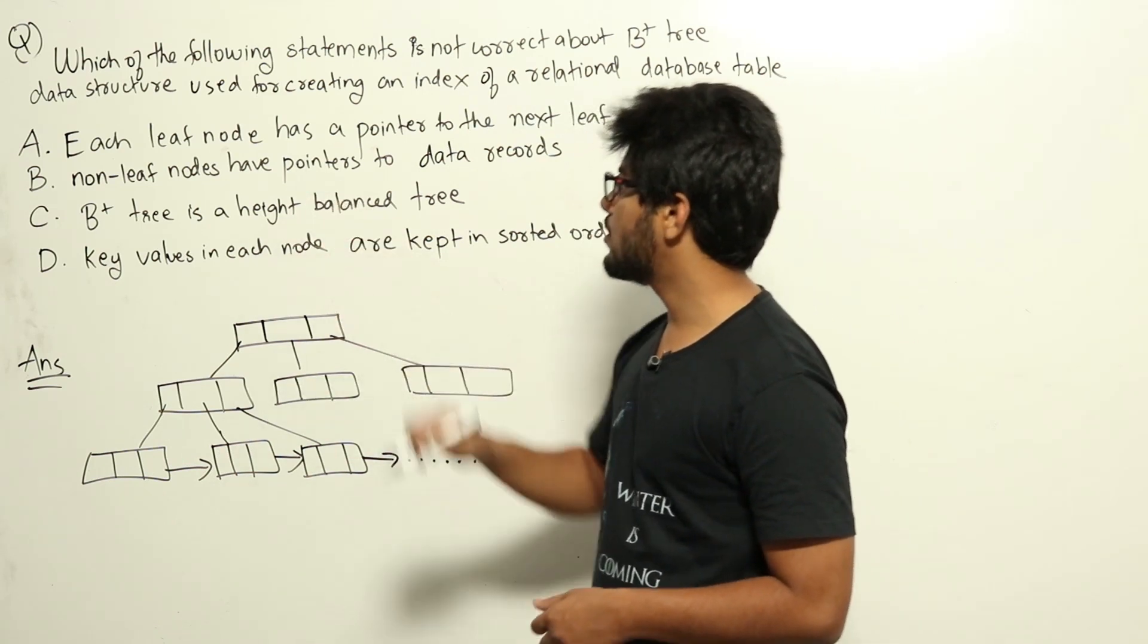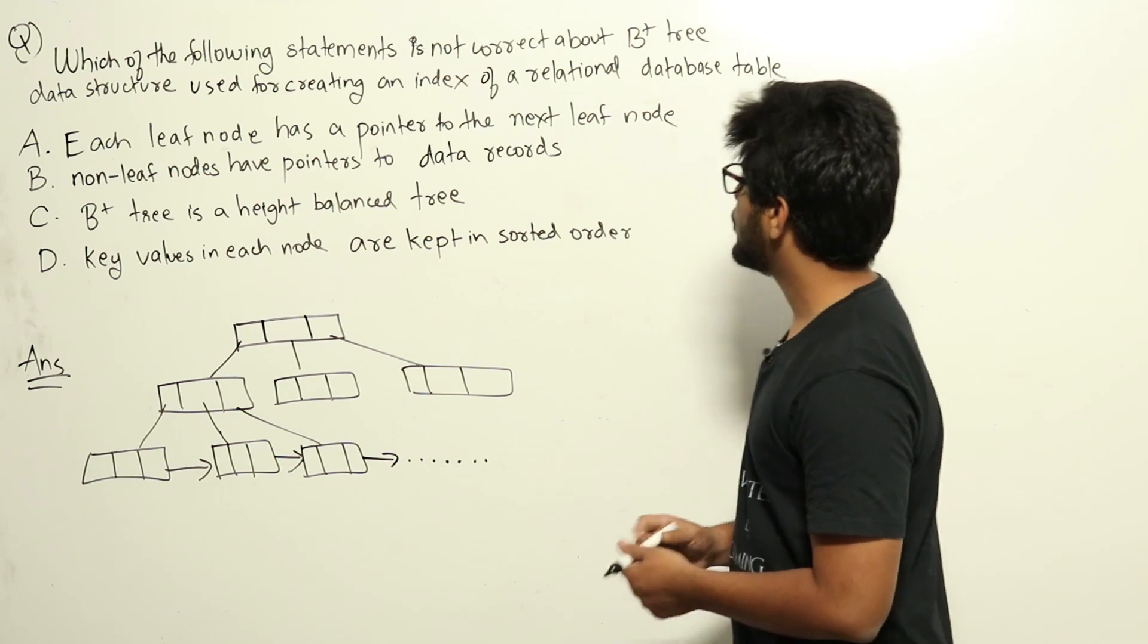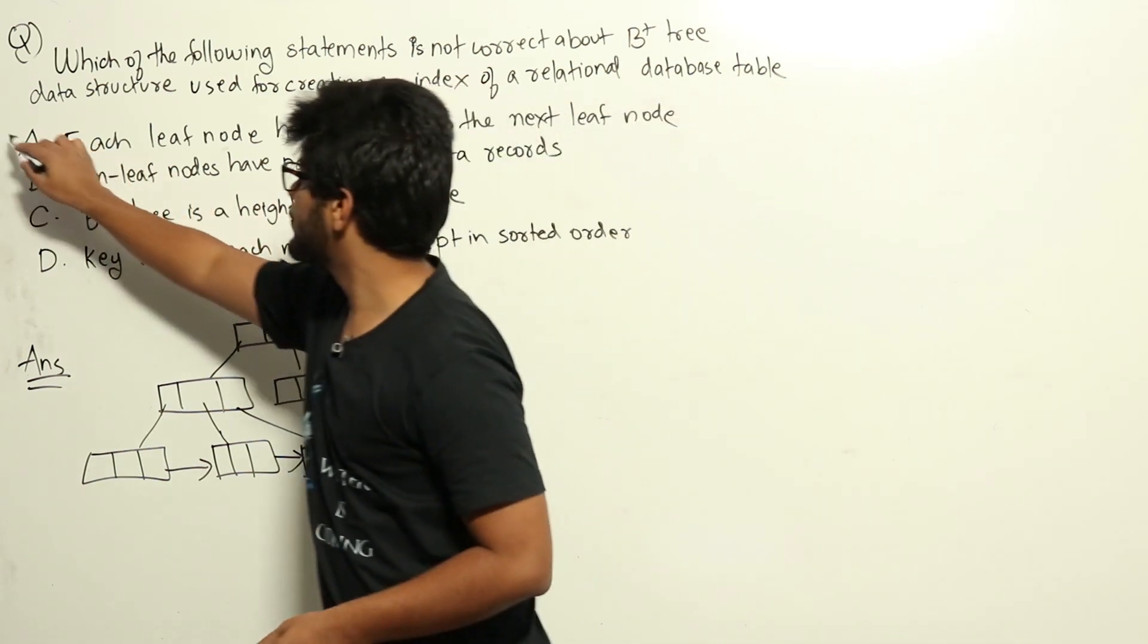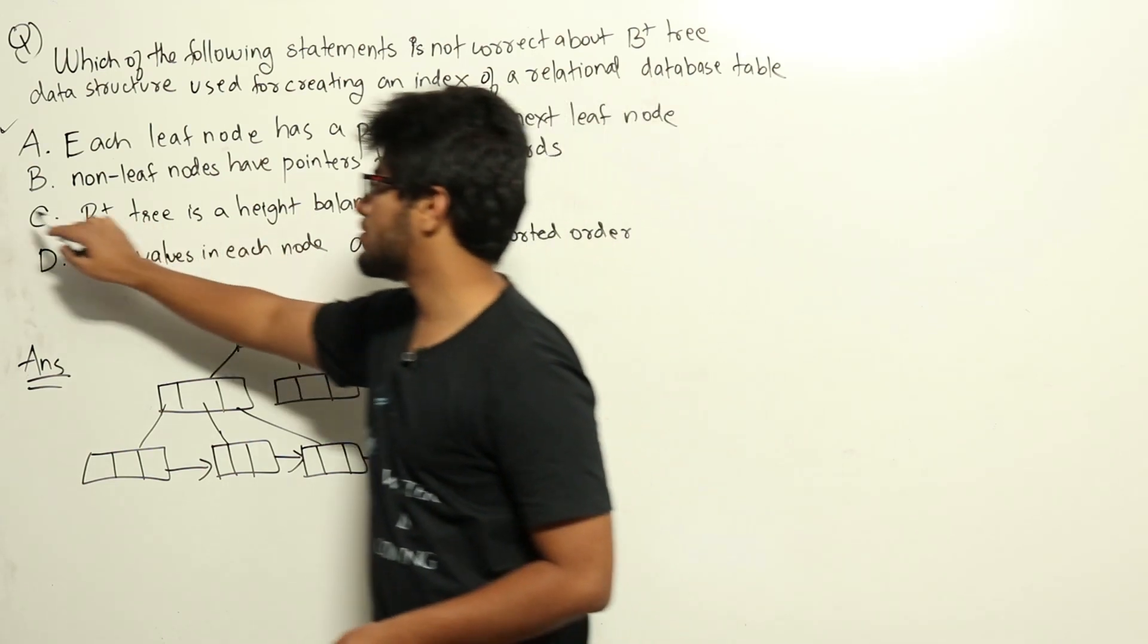Now, based on the information, we can look at the options. Each leaf node has a pointer to the next leaf node. That is true. Option C, B plus tree is height balanced tree is also true.